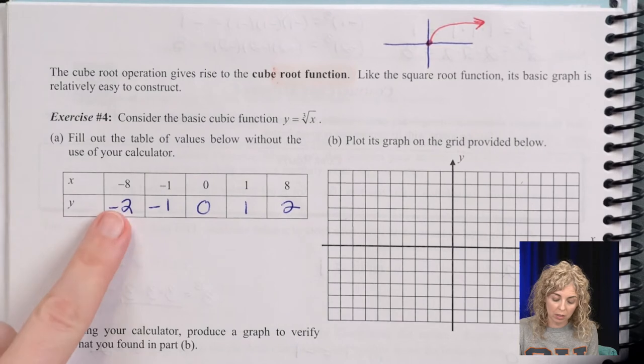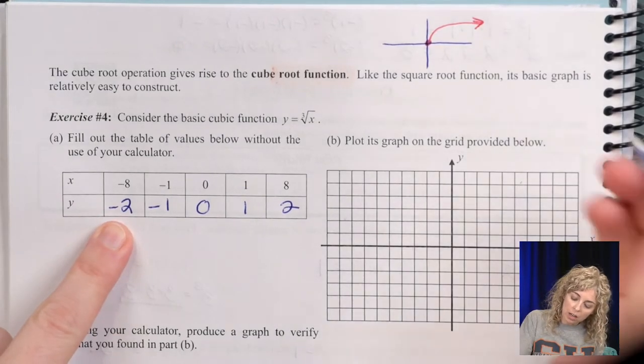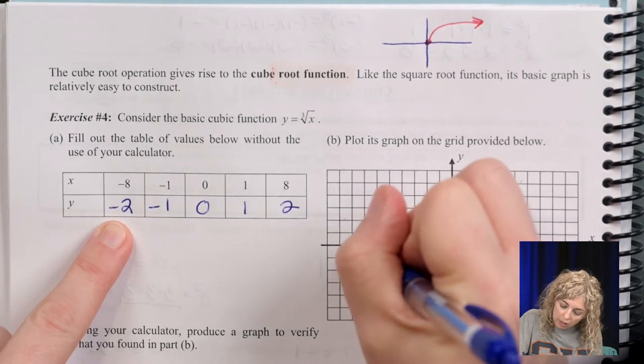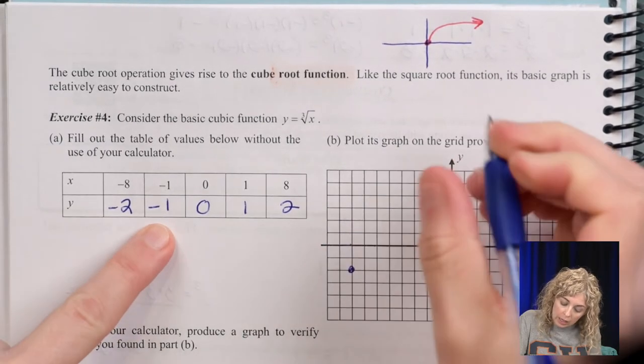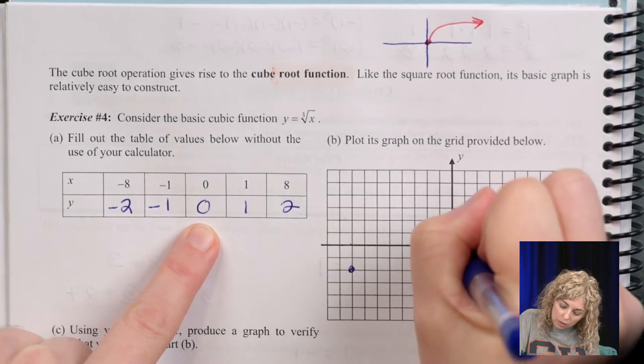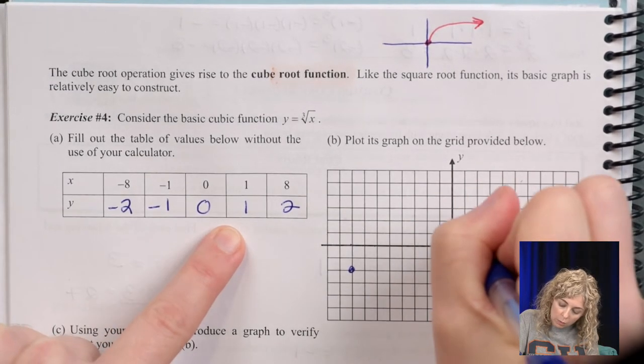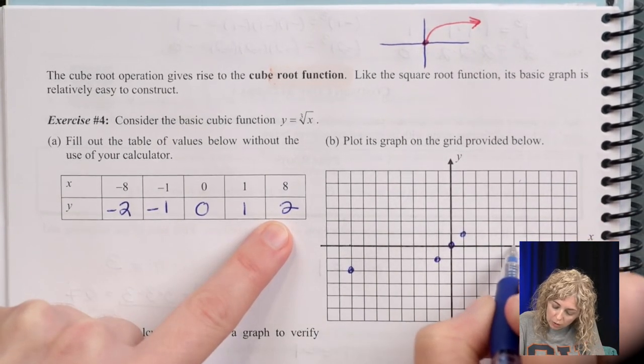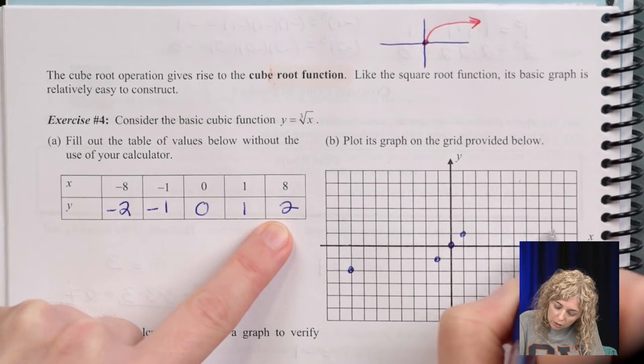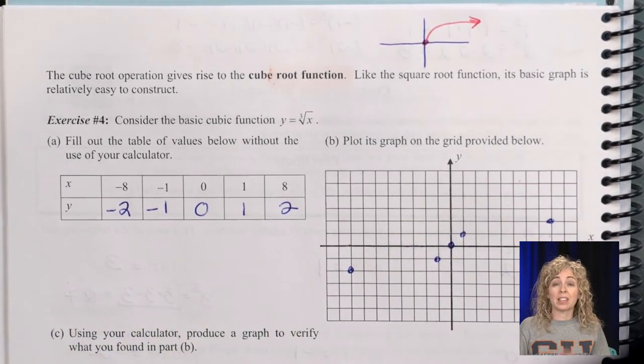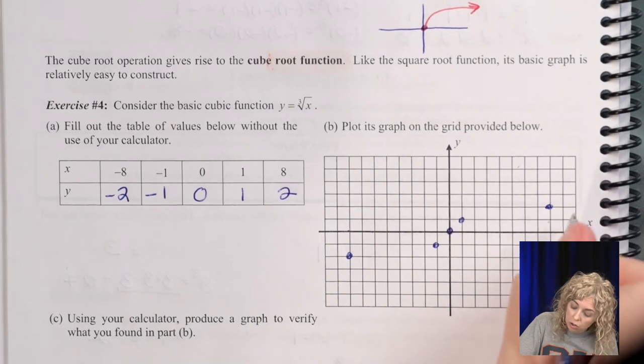Now let's plot these points. We're going to plot (-8, -2). So left 1, 2, 3, 4, 5, 6, 7, 8, down 1, 2. Then (-1, -1), (0, 0), (1, 1). And then (8, 2). 1, 2, 3, 4, 5, 6, 7, 8, up 1, 2. Now it kind of looks like a stretched out S when you connect it.